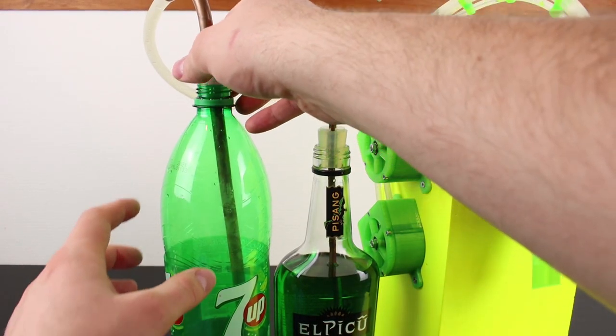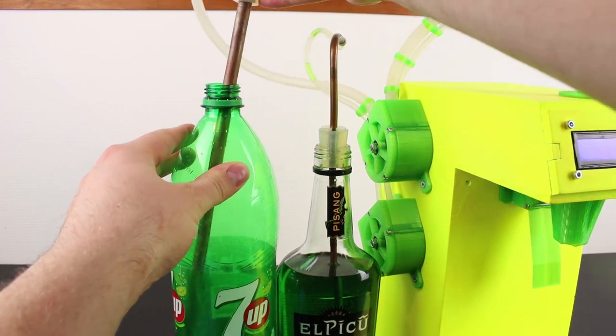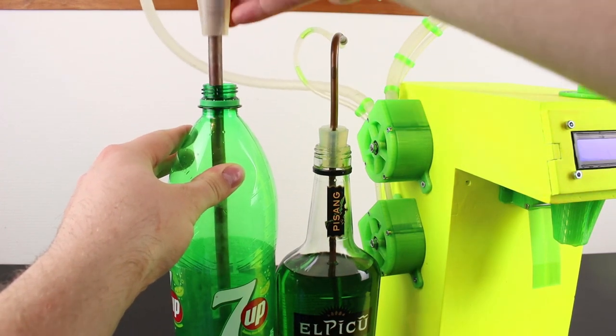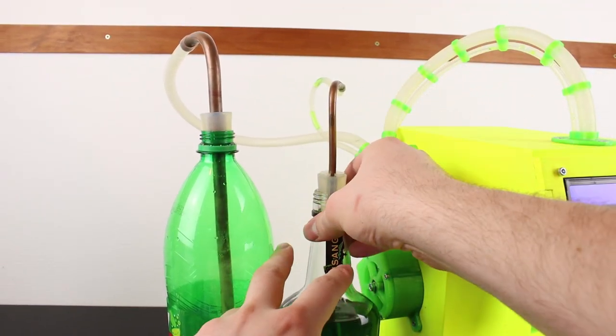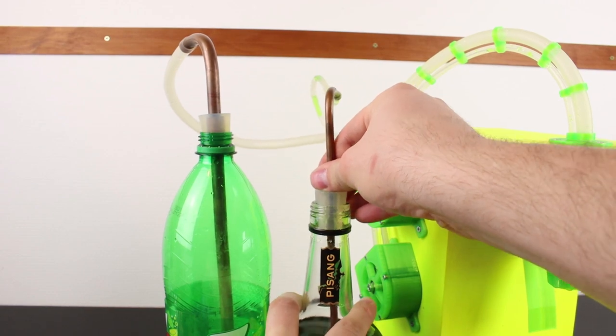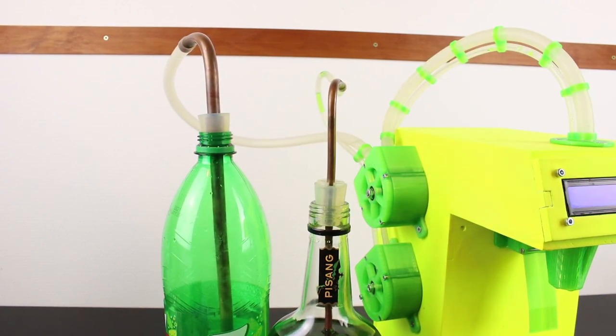This brings us to the last topic before we open up the machine. The hoses that are used, the metal tubes and the connection to the bottles. The tubes are made of food grade silicon and are used in the beer brewing scene and therefore perfect for this application.